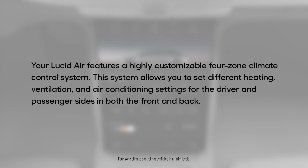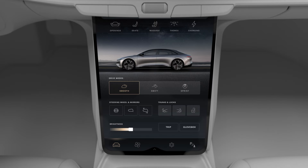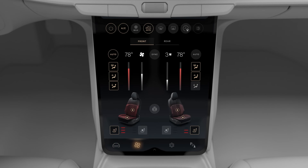Your Lucid Air features a highly customizable four-zone climate control system. This system allows you to set different heating, ventilation, and air conditioning settings for the driver and passenger sides in both the front and back. To access your climate controls, tap the climate control button on the pilot panel.